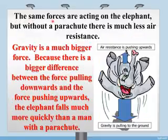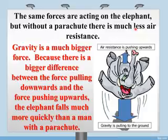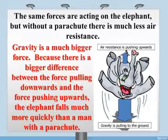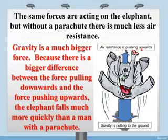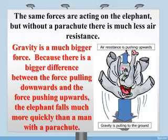Second example: the same forces act on an elephant falling without a parachute, but there is much less air resistance. Gravity is a much bigger force because there is a bigger difference between the force pulling downward and the force pushing upward. So the elephant falls much more quickly than a man with a parachute. Here, gravity is much bigger than the air resistance, so the elephant moves toward the ground with more speed.